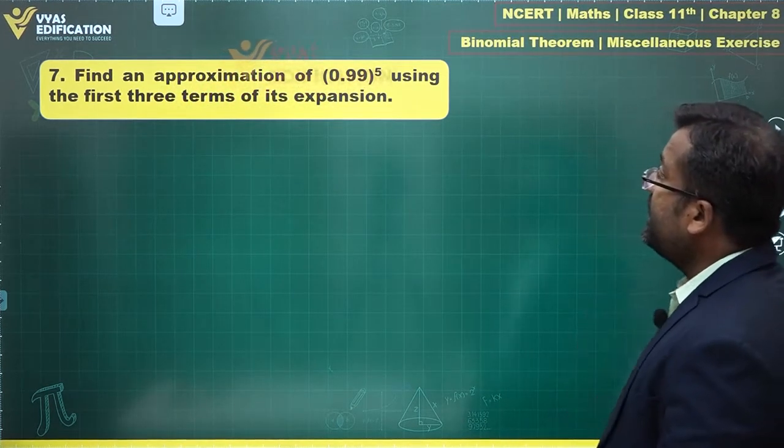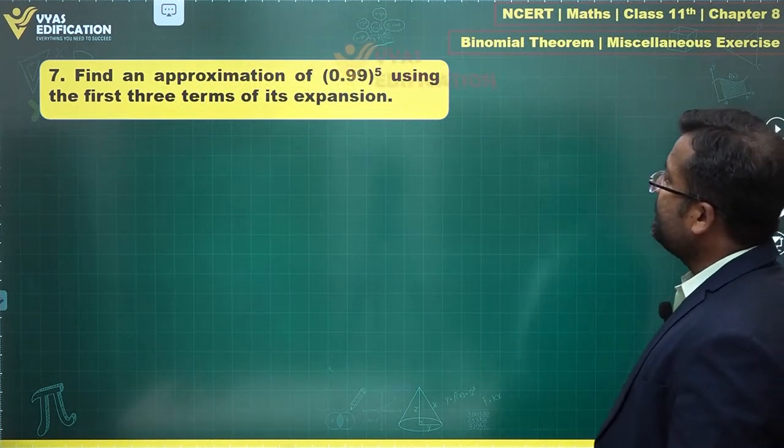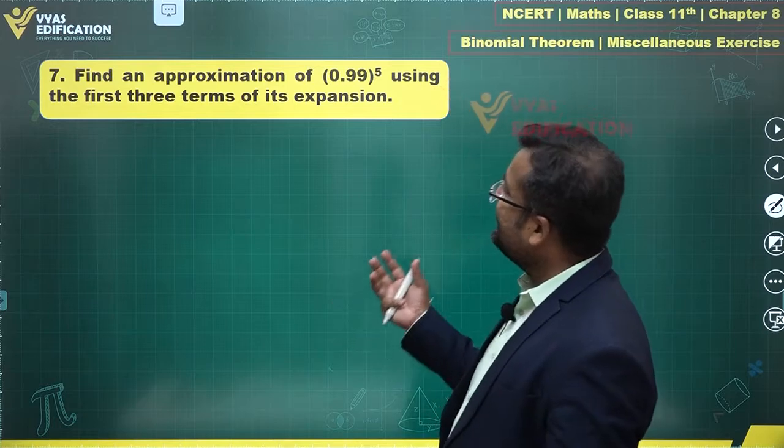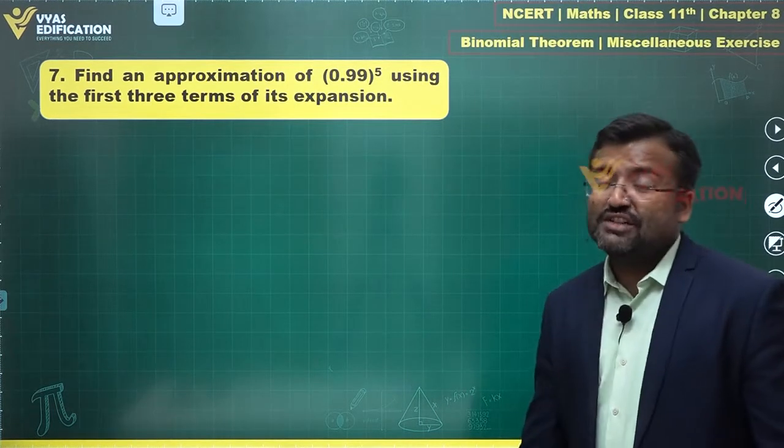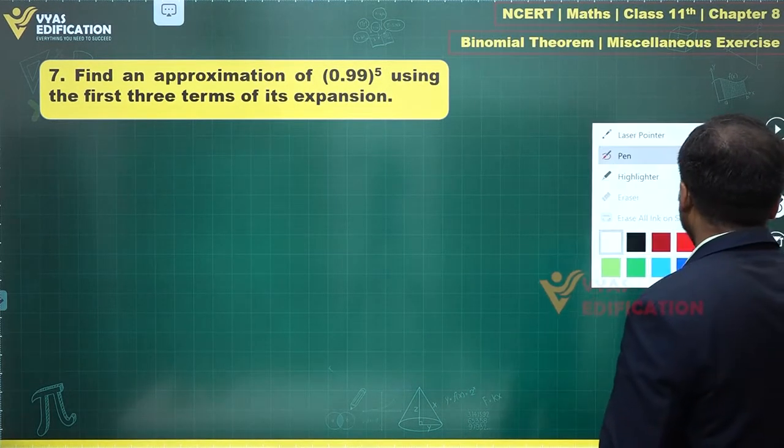Let's solve this question. Find an approximation of 0.99 raised to power 5 using the first three terms of its expansion. We are supposed to find this using binomial expansion. How do we go about doing that?